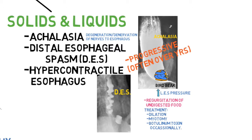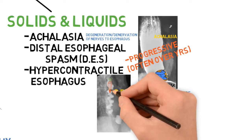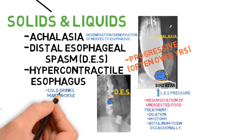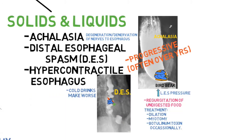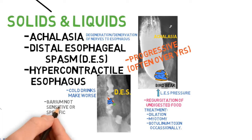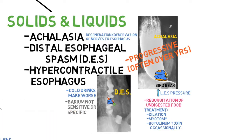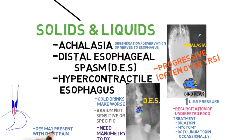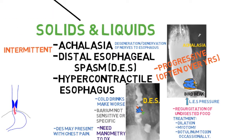Distal esophageal spasm (DES) occurs with both solids and liquids. Cold drinks tend to make it worse. A barium swallow or upper GI is not sensitive or specific — we actually need a manometry study to diagnose it. DES may present with chest pain due to contractions in the chest, and it is intermittent.